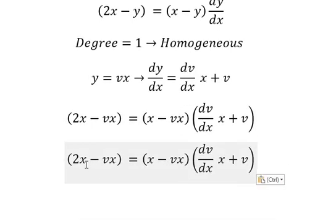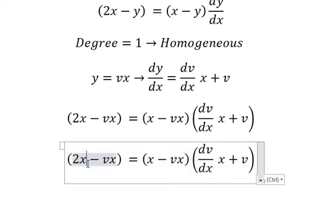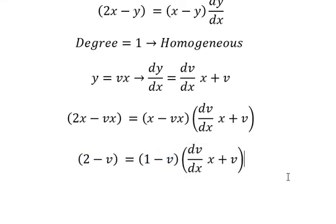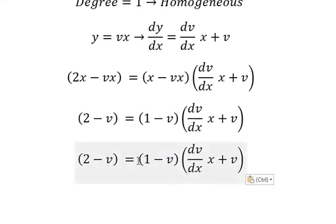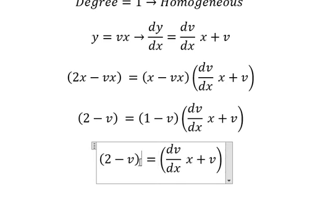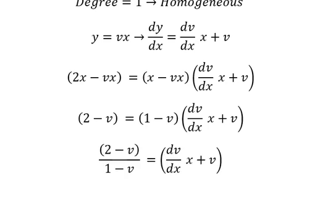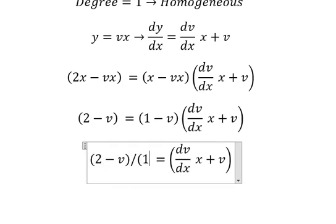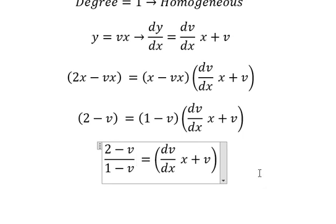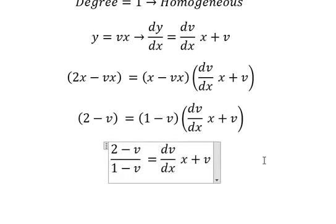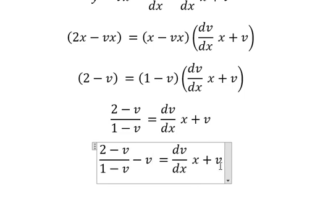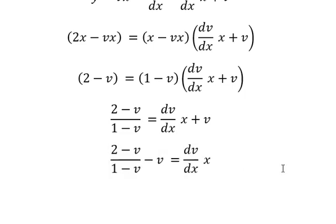Next we need to simplify x for both sides. Next we divide both sides by 1 minus v. I will put v on the left.